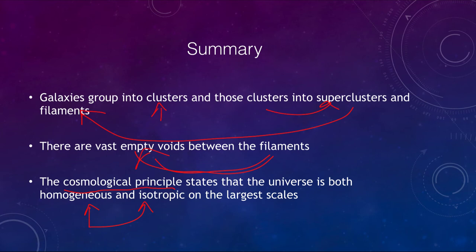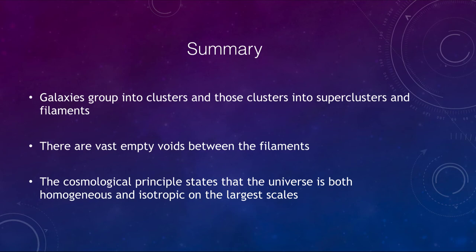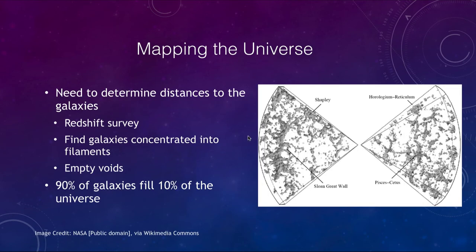The universe does not look homogeneous or isotropic at small scales because of these great voids. However, on the very largest scales, if we take a whole big chunk of the universe in one region and compare it to another big chunk elsewhere, we would find roughly the same number of galaxies in each of these very large chunks.